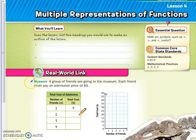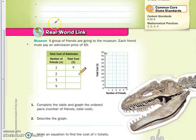Today we talked about a real world link of students going to a museum. A group of friends are going to the museum and each friend must pay an admission price of $9. So, what we are going to do first is complete the graph and graph the ordered pairs. So if one friend goes, then it's only $9. But if two friends are going, then it should be $18. If three friends are going, that's $9 each, 9 times 3 is $27. And then finally four friends would be 9 times 4, which is $36. So each time it looks like we are multiplying by 9.